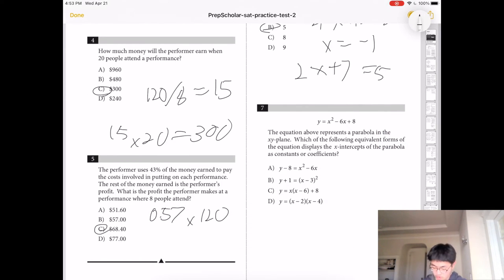Number 7, the equation above represents the parabola in the x-y plane. X shows that x-intercepts. Okay, so the only one that shows x-intercepts is D because it shows that it's 2 and it shows that it's 4. So the answer has to be D.